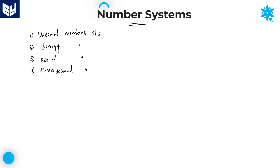First, in the decimal number system, we will be having a total of 10 digits. Those 10 digits are 0 to 9. Coming to the binary number system, we will be having only two digits. Those are 0s and 1s.